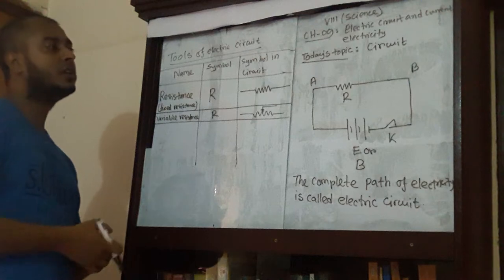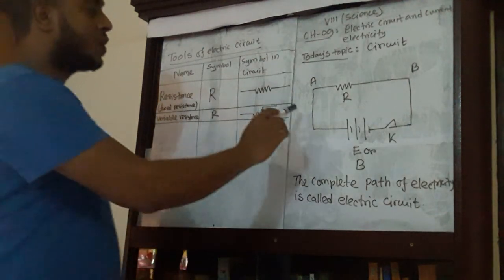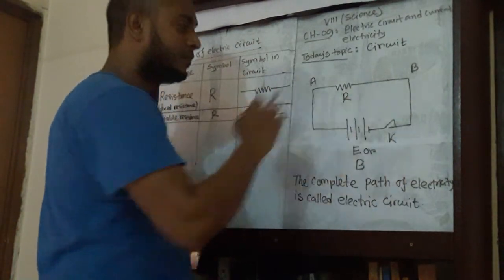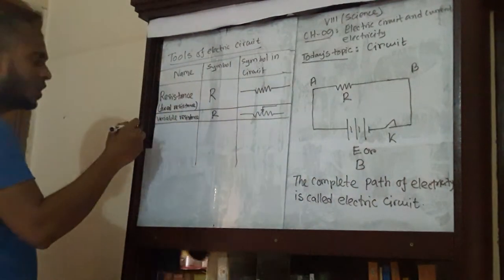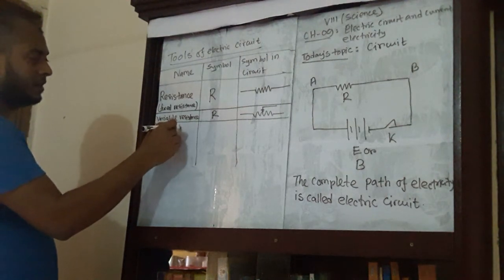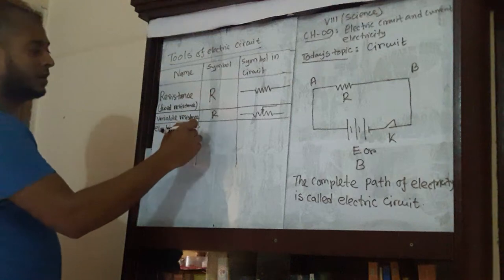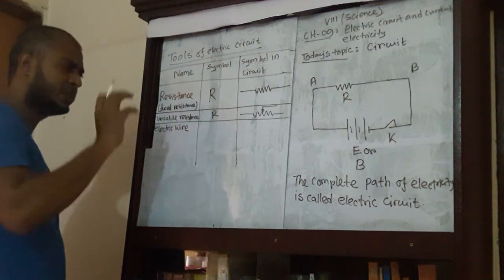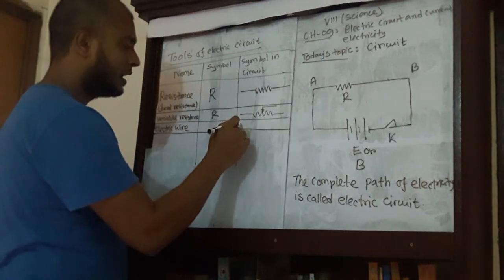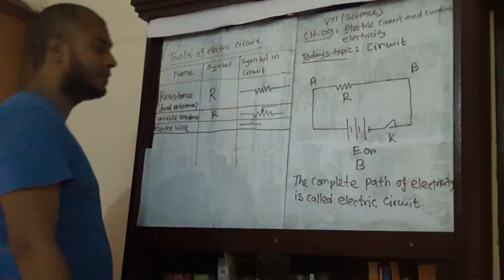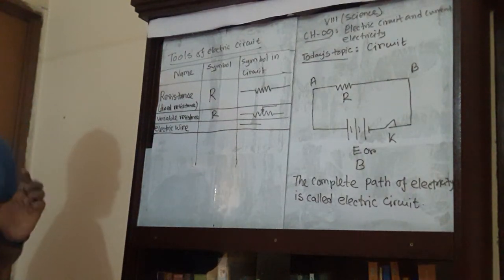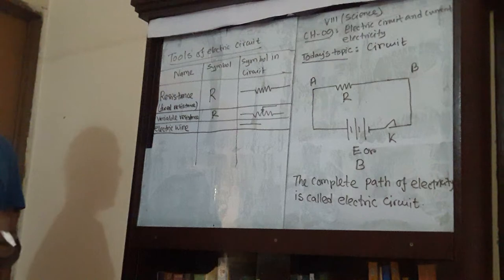In the next step, we need some electric wire. These are the electric wires. Electric wire has a specific symbol in the circuit — a straight line is the symbol of electric wire. And especially, a disconnected electric wire is represented by a broken straight line.